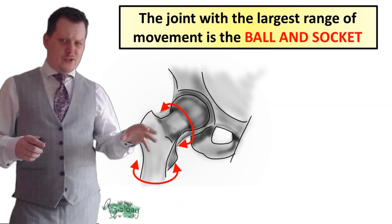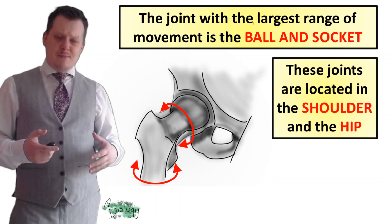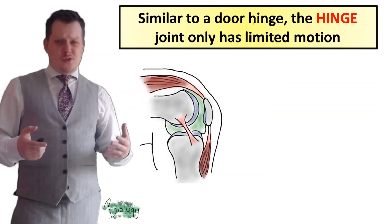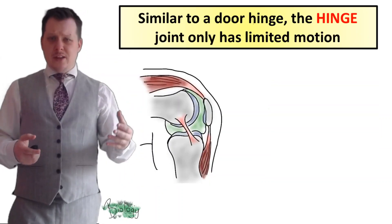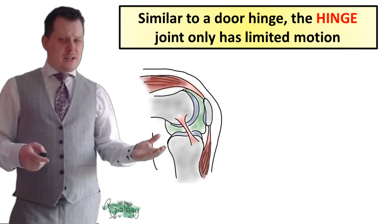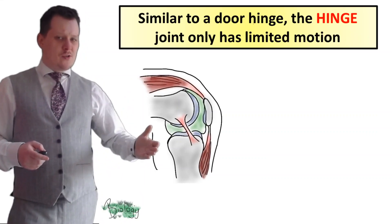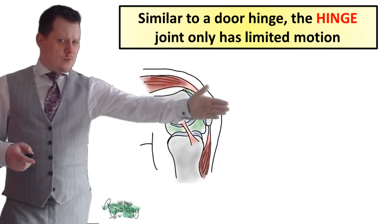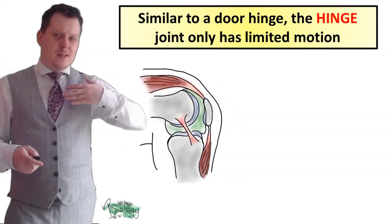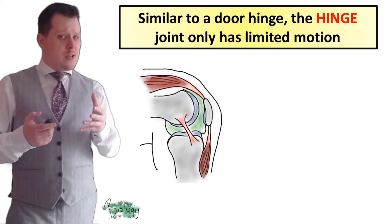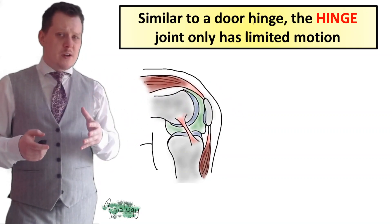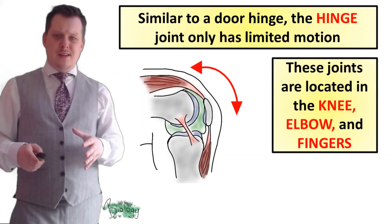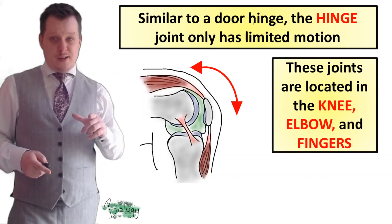The joint with the largest range of movements is the ball and socket joint, which can be found in the shoulder and in the hip. Similar to a door hinge, we have the hinge joint, but it's only got a limited range of motion — it swings open and swings back. These joints only have the same degree of motion as a door hinge and can be found in the knee, the elbow, and the fingers.